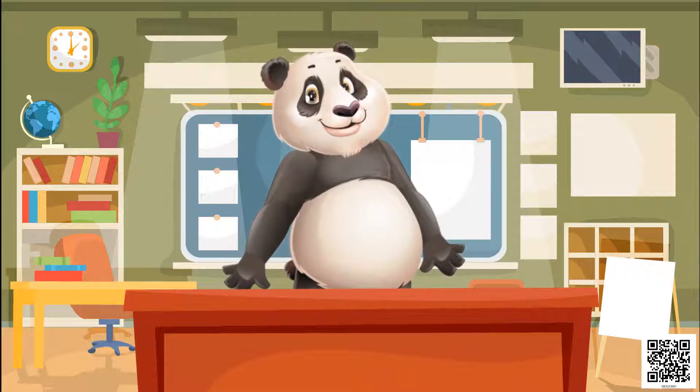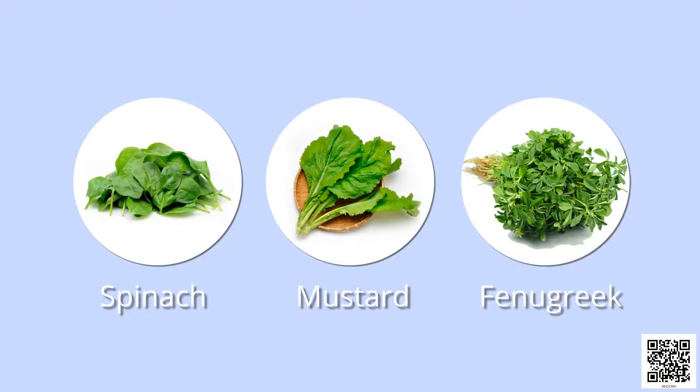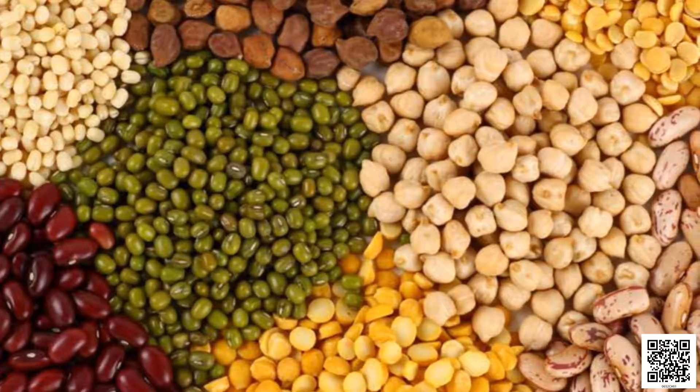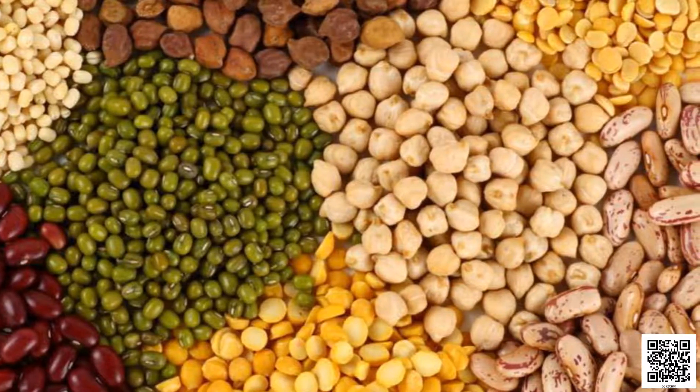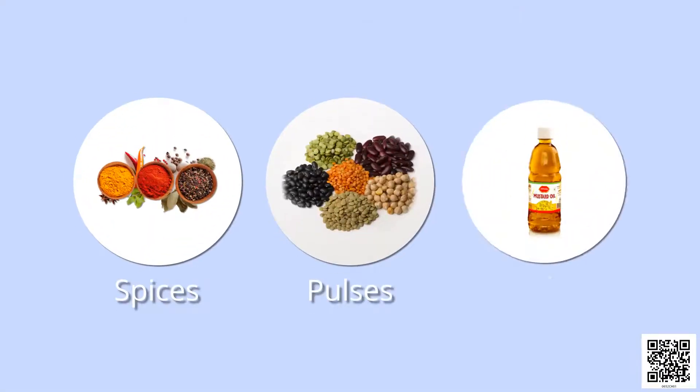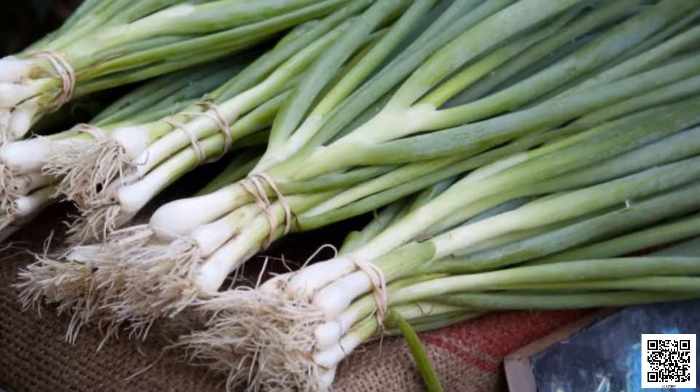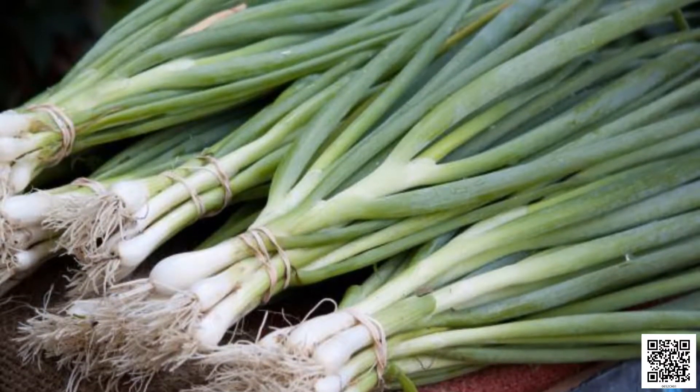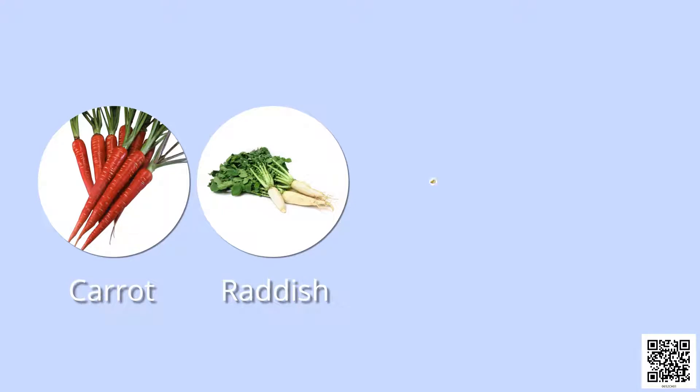Let us now see some examples. We eat leaves of spinach, which is also called palak, mustard, and fenugreek, which is also known as methi. Apple, grapes, banana, and mango are fruits of plants that we eat. Seeds of some plants are also edible, for example spices, pulses, and cereals. Edible oil is also obtained from seeds. The roots and stems of some plants are also edible. For example, carrot and radish are roots that we eat, whereas potato is an underground stem.